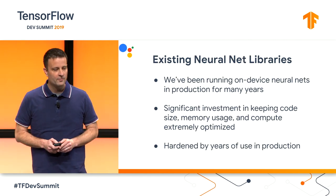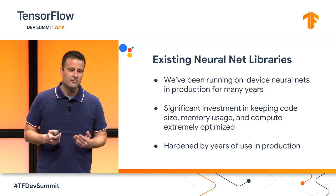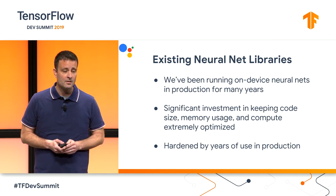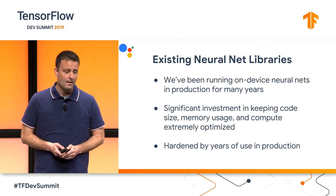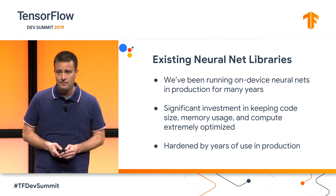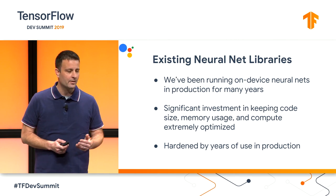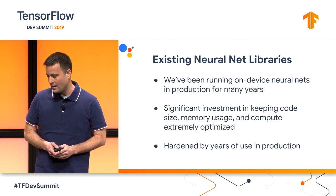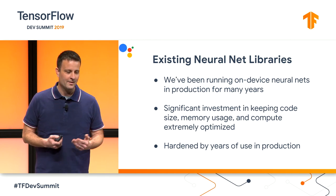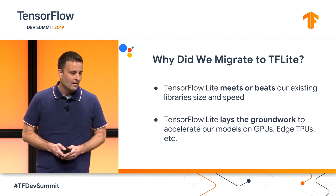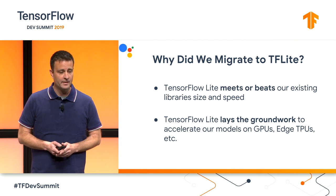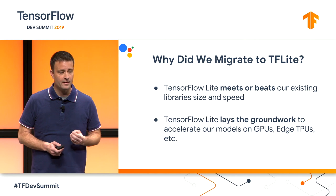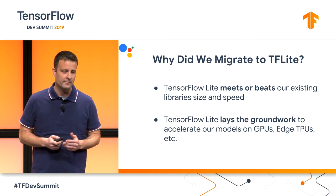Over the years, we've been working on this for a long time — before there was TensorFlow Lite, before there was TensorFlow. We've been investing a lot in building our own on-device neural net libraries and shipping them to production in Google products. As a team, we've already invested significantly in keeping our code size tiny, our memory usage small, optimizing our compute for all of these different platforms, and all of our code after many years of production use is really hardened and hopefully as bug-free as you can get it. But over the last year, we decided to migrate to TF Lite.